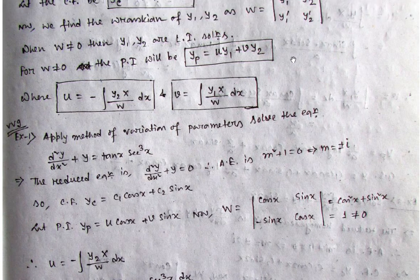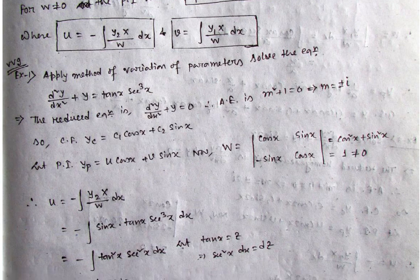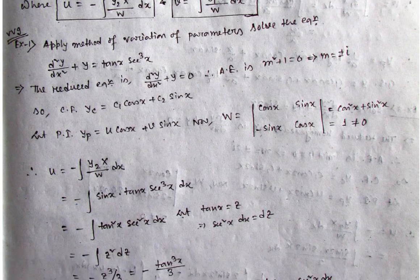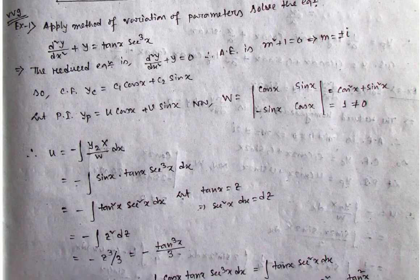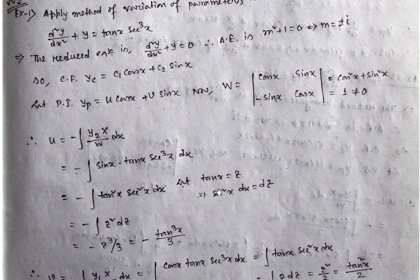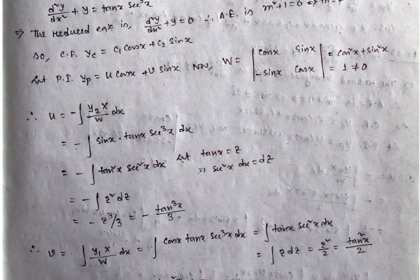The particular integral will be in the form of the complementary function, but replacing c1 by u and c2 by v. So yp equals u·cos x plus v·sin x. To find u: u equals minus integration of (y2·X / Wronskian) dx, where y2 = sin x, X = tan x·sec³x, and Wronskian = 1. Similarly, v equals integration of (y1·X / Wronskian) dx, where y1 = cos x and X = tan x·sec³x. Simply substitute these values and solve the integrations, which are straightforward.